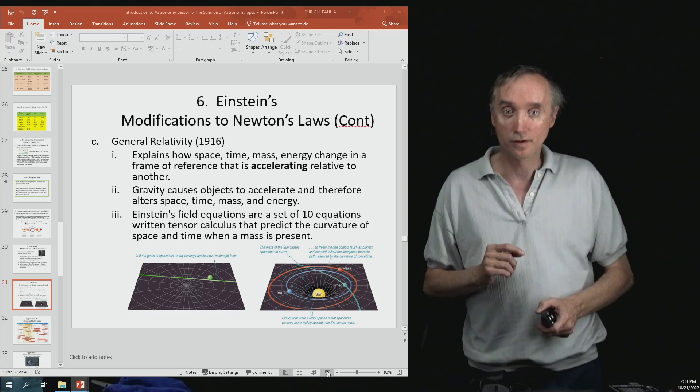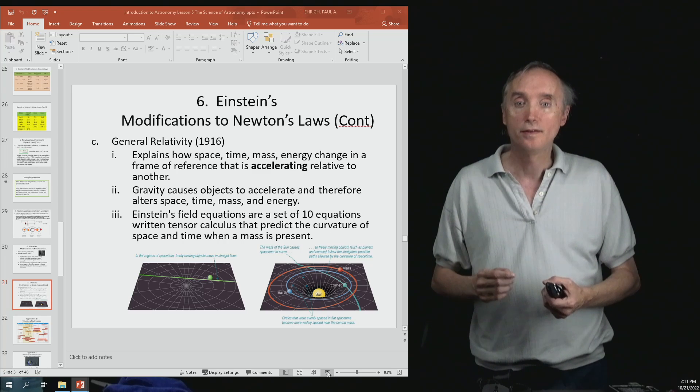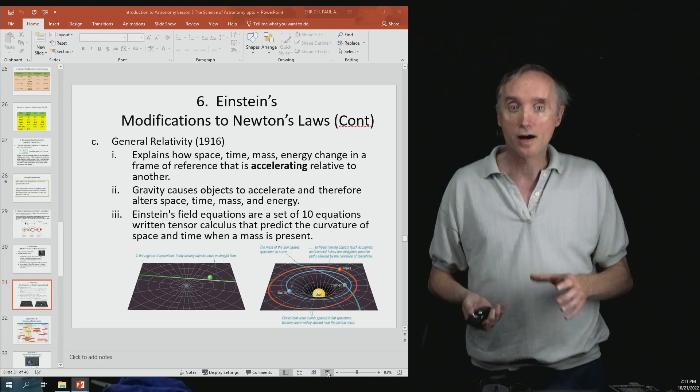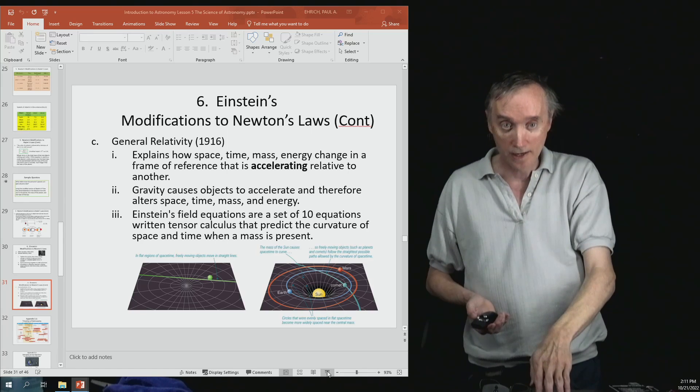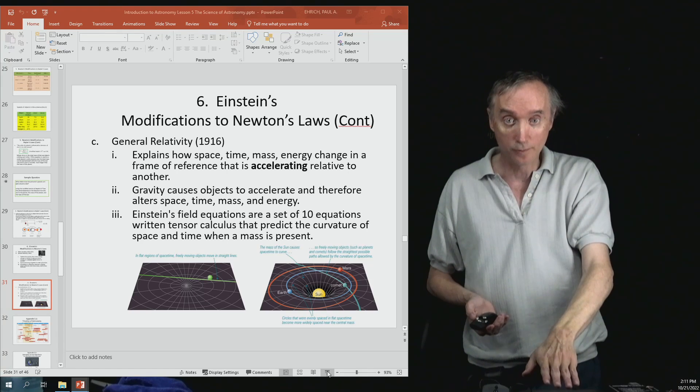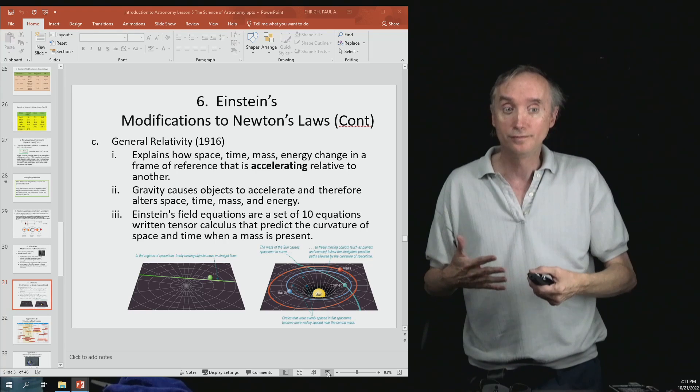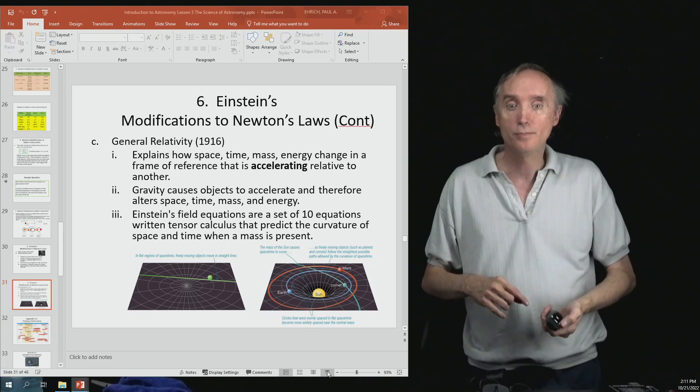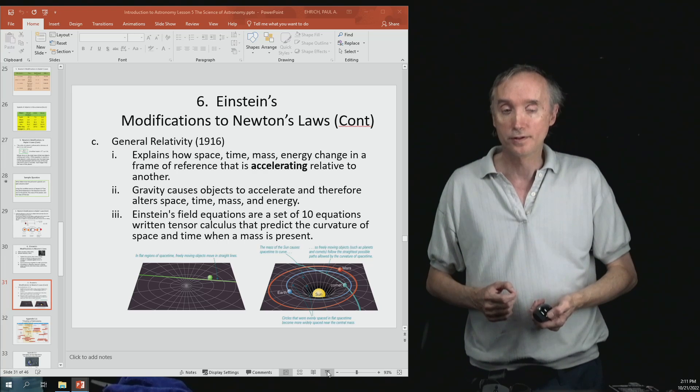What he found was that gravity causes objects to accelerate. If you take a ball and you drop it, as it's falling it's going to speed up. So gravity is a type of acceleration, and gravity can be explained using his general theory of relativity.